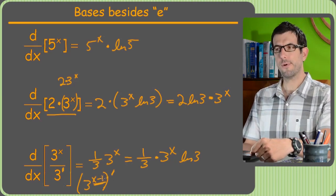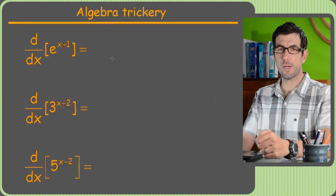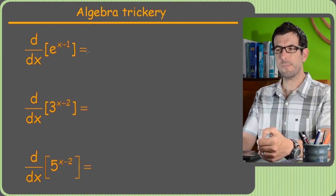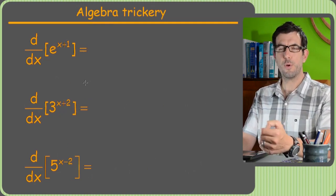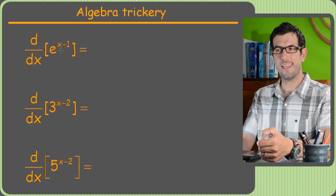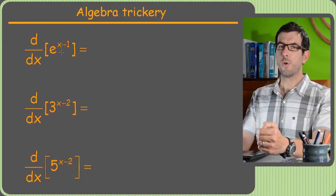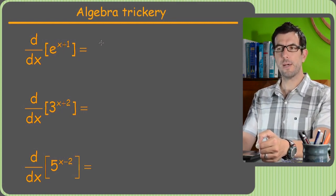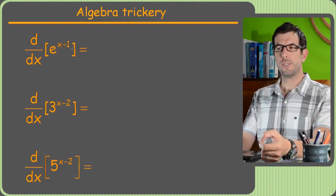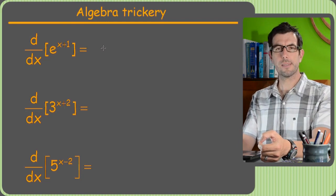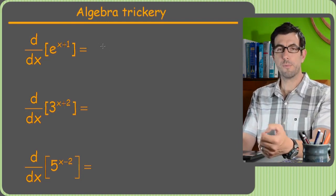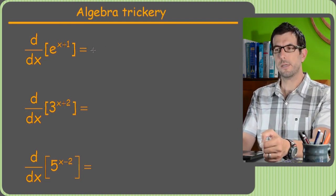The problem is, now this is a chain rule problem because our exponent isn't x anymore, it's x minus 1. So I'm just warming you up for some algebraic trickery. I just want to remind you of this. These problems right here, they don't look like you'd be able to do them without the chain rule, because like I said, if the exponent is anything besides x, you can't take the derivative without the chain rule. But we can actually use some algebraic trickery to turn these into things that are not, to kind of like reduce the exponent to x.